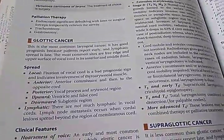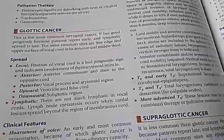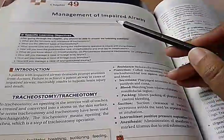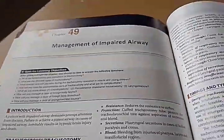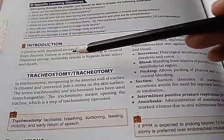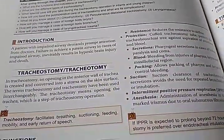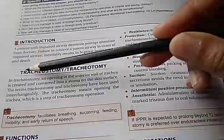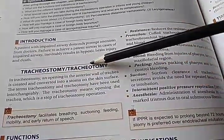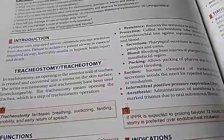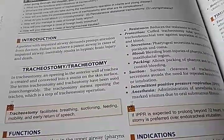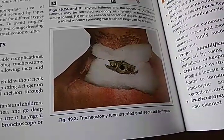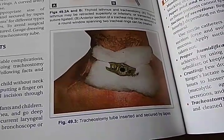Obviously there are also malignant conditions of the larynx. Then management of impaired airway — this is a very important topic — tracheostomy and tracheotomy. There's just one letter 's' difference, and they basically mean the same thing. Here they are showing a tracheostomy tube inserted and secured by tapes.